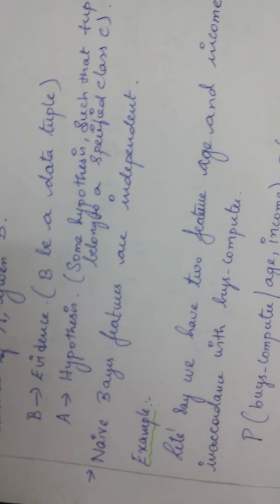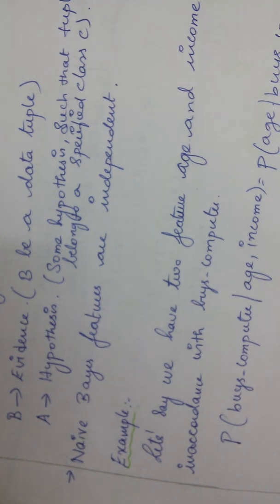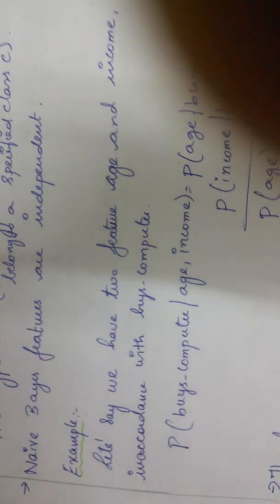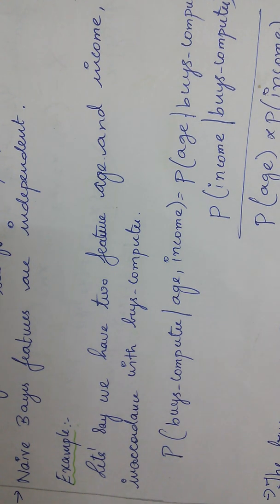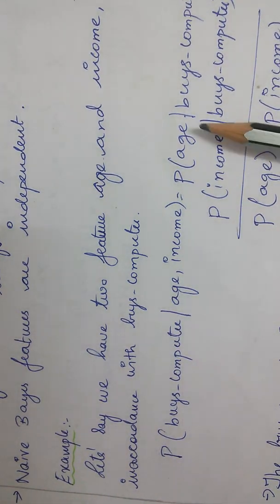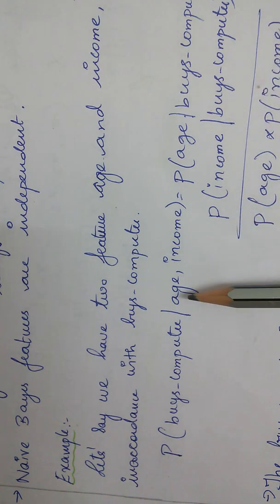I'll give you an example. Let's say we have two features, age and income, in accordance with buying a computer. So my main aim is to classify the user who is going to buy a computer. So the probability of buying a computer with the features age and income — Vice computer conditioned on age and income — equals probability of age conditioned on buying a computer times probability of income conditioned on buying a computer. I have two attributes, so I'm just making a hypothesis.